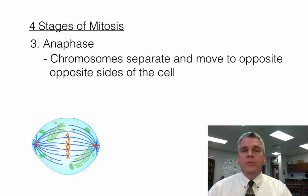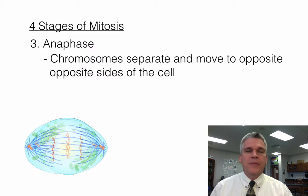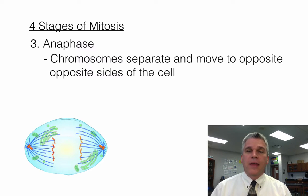During anaphase, the chromosomes separate and move to opposite sides of the cell. So the chromosomes are being pulled apart by the spindle fibers, and you can see that there are four chromosomes moving to each side.